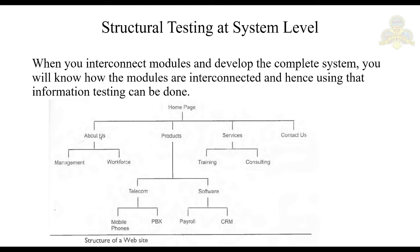For example, a website structure shows four links on the home page: About Us, Products, Services, and Contact Us. For each link, the next-level links need to be identified. Testing must verify that this structure exists in the actual website, that all links work, and that there are no missing or broken links. Clicking About Us should display Management and Workforce links, and clicking Management should display its related content.